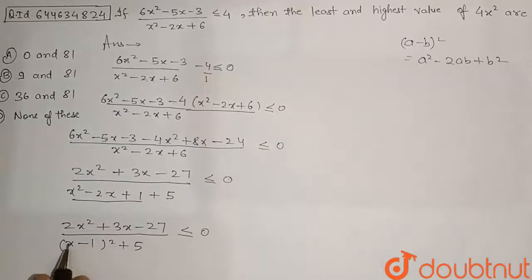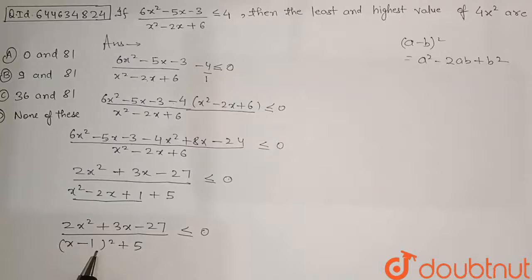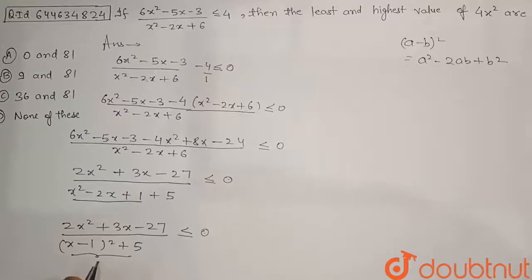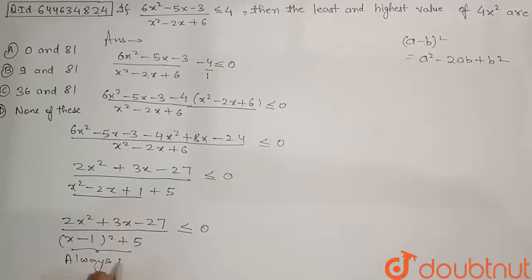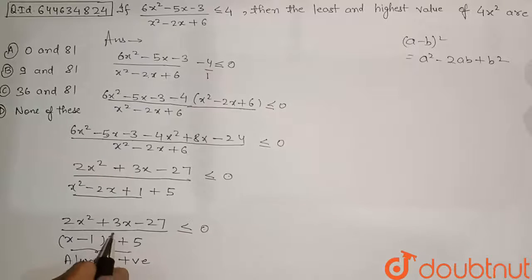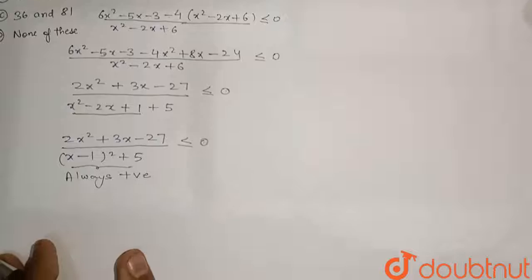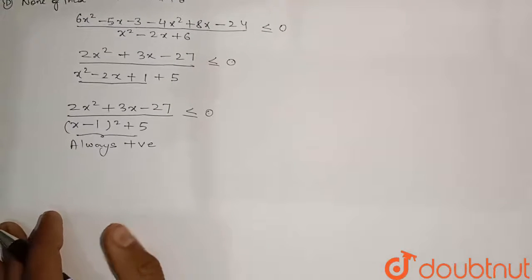Observing the denominator: (x - 1)² is always non-negative and adding 5 makes it always strictly positive. So the denominator is always positive, meaning the sign of the whole inequality is decided by the numerator only. We will use the numerator to find the critical points by factorizing it.